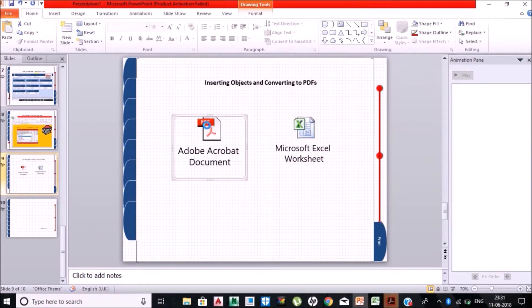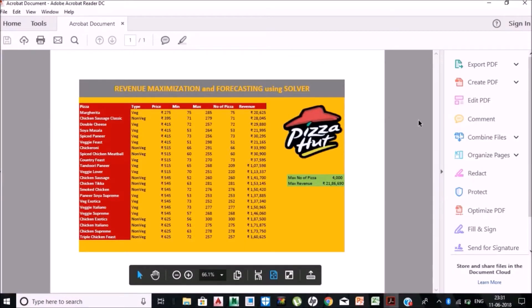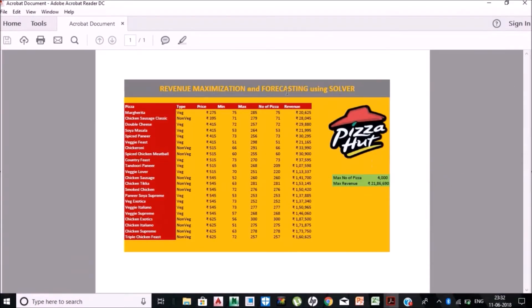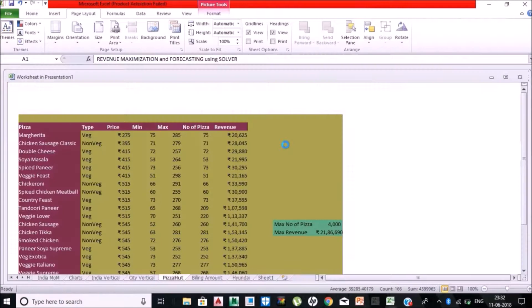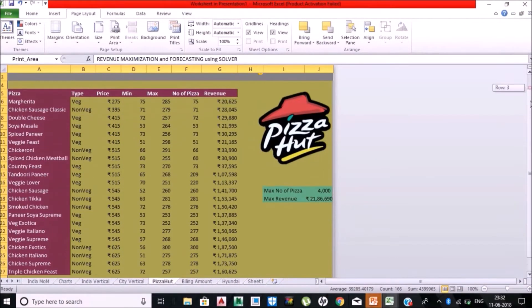So let me open the PDF file first. This is showing the my menu chart for Pizza Hut. Now this is the Excel file that I am opening from which I have inserted the data.